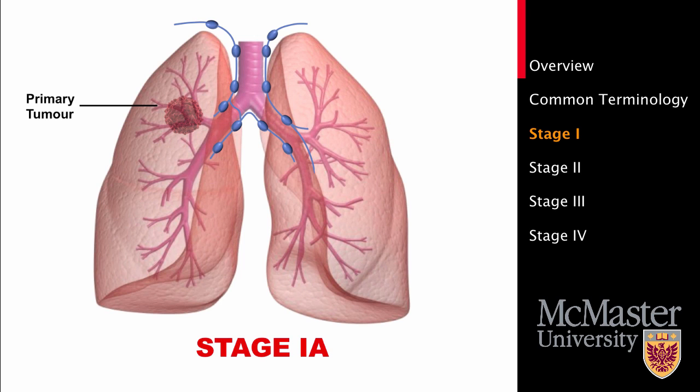The first type of stage 1 lung cancer is stage 1a. This is where the tumor is less than 3 cm or 1.5 inches. The lung cancer cannot be found in any nodes and there is no metastasis.